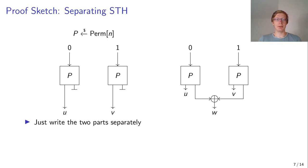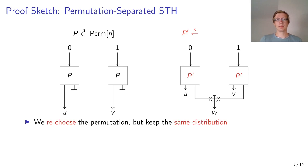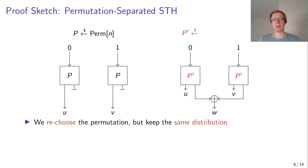As a first approach, we might just write the two parts separately. However, this creates a problem because both parts use the secret PRP, which means the constructions do not behave independently and we cannot analyze them separately. So what we would like to do instead is re-choose our permutation P-prime for our summation part, but in such a way that we keep the same construction as before. We cannot just choose it from all possible permutations, because that would give a completely new distribution for the outputted values, and we cannot reference our secret value P because that would create a dependence between the two constructions.